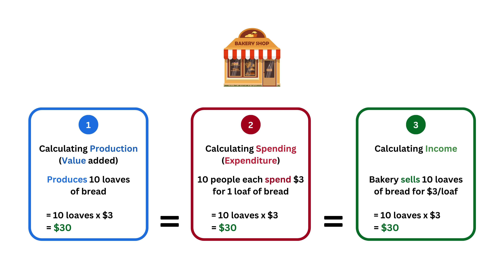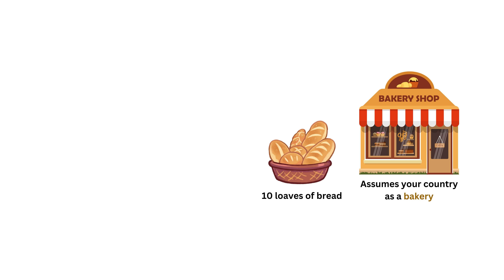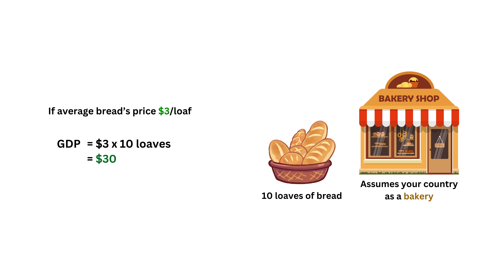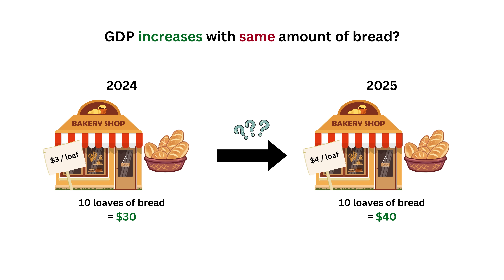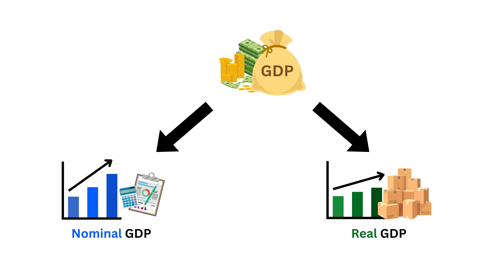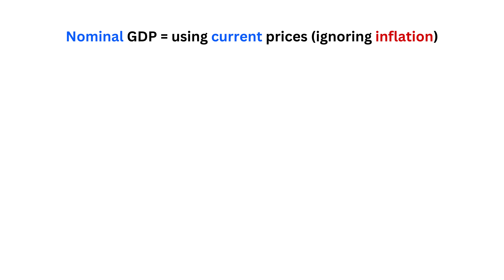Now you might wonder: if a bakery produces 10 loaves of bread priced at $3, the GDP is $30. But inflation happens over time and bread prices increase — so is the GDP increasing even though there are still only 10 loaves of bread? Due to this problem, GDP has two types: nominal GDP and real GDP.